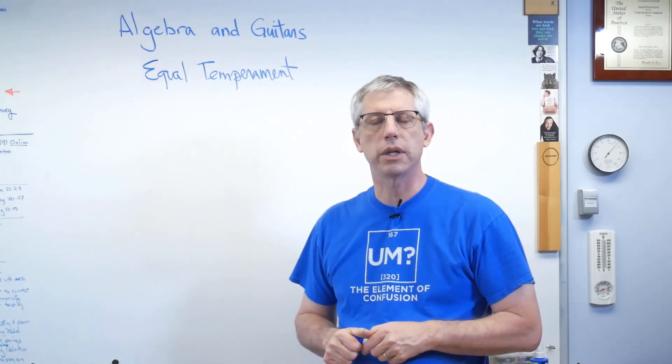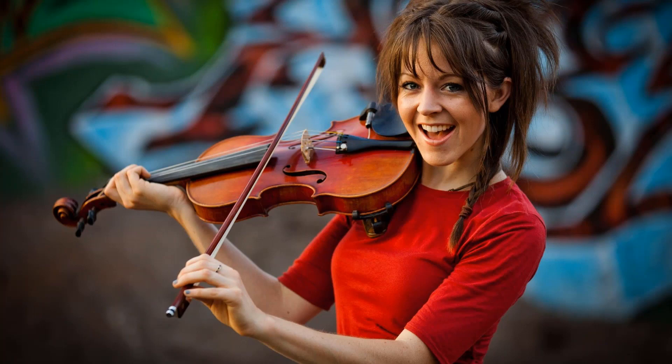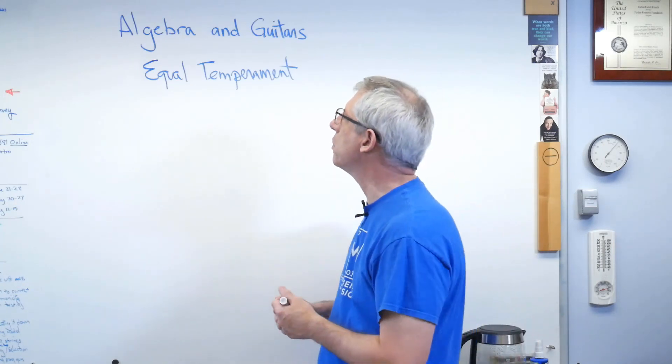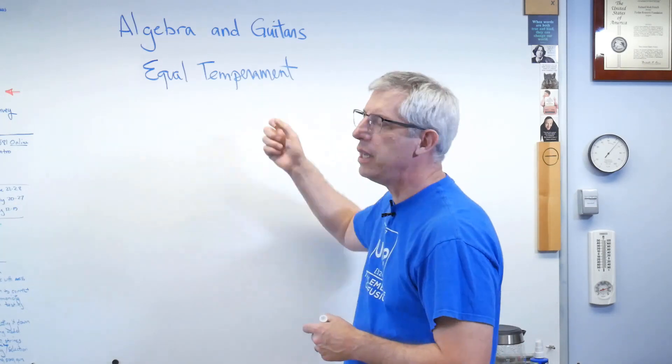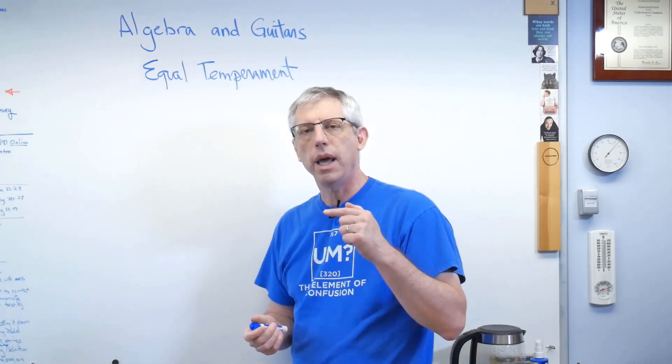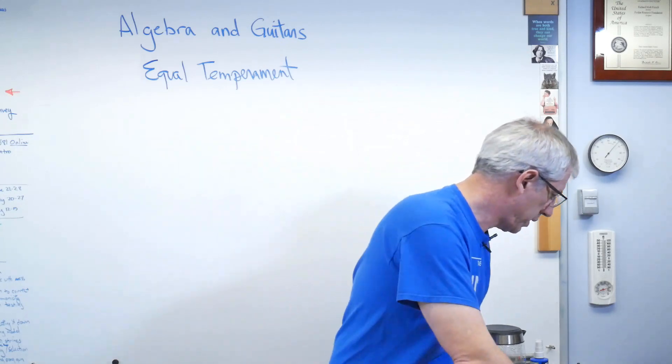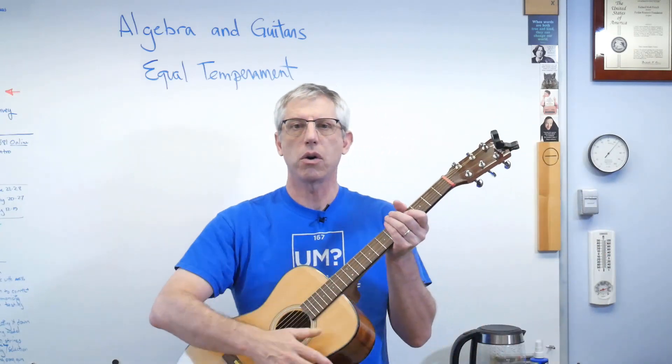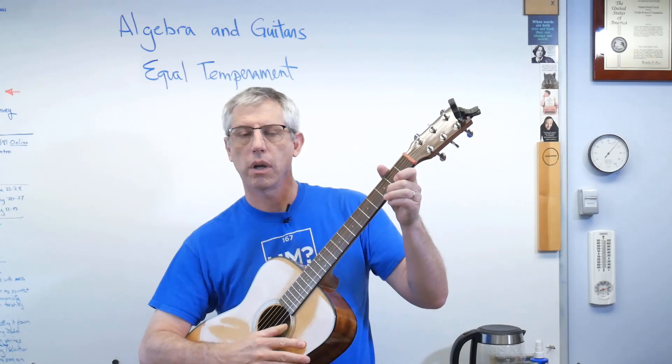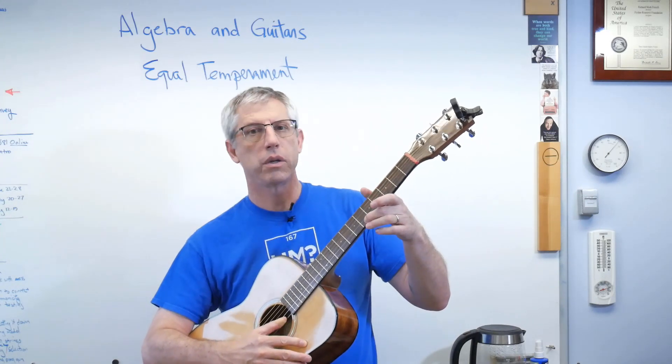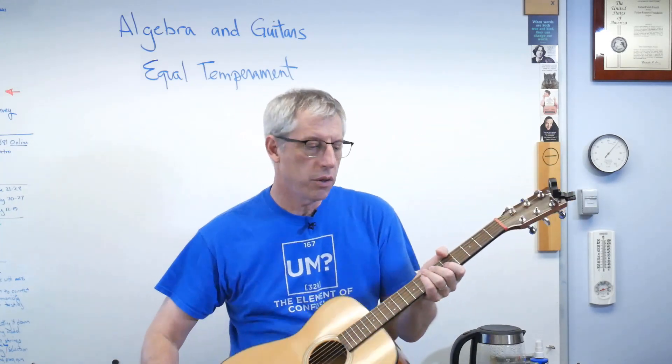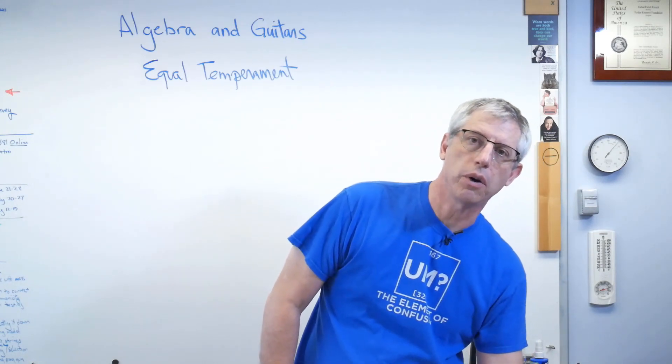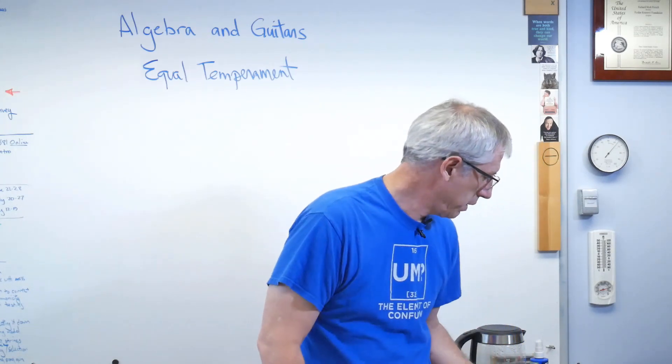Research suggests that violinists tend to play in something called just-tempering. So, these are three of the many tempering systems that were out there. And the idea of equal tempering is that every note, every time I go from one note to the next one up, the frequency increases by the same ratio every time.